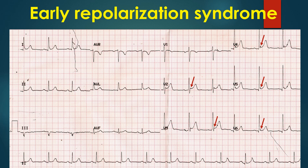An ECG showing concave upward ST segment elevation with a notch at the end of the QRS complex, or a slurring of the terminal QRS seen in lateral leads, is characteristic of early repolarization syndrome. J waves have been marked by red arrows.